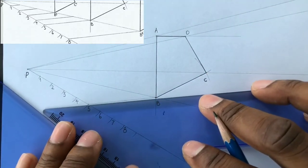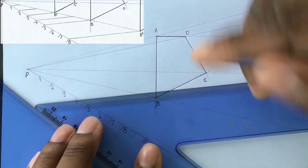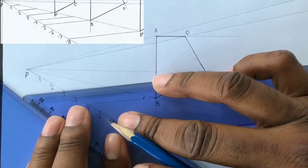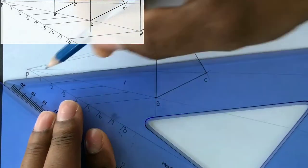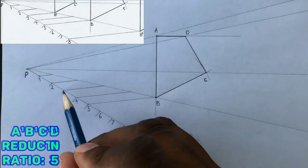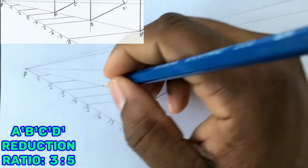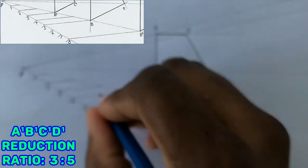Using your two set squares, draw these parallel lines. Remember to hold the set square in your left hand steady. It must not move. Now identify the point where the third division intersected line PB. Label this point as B1.